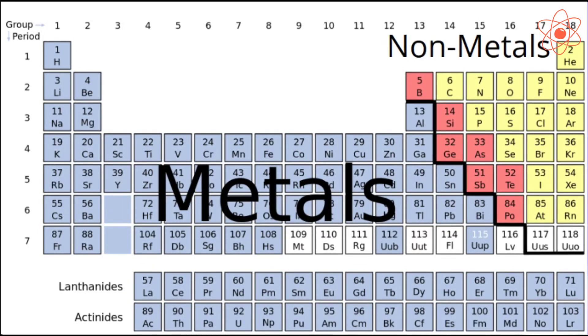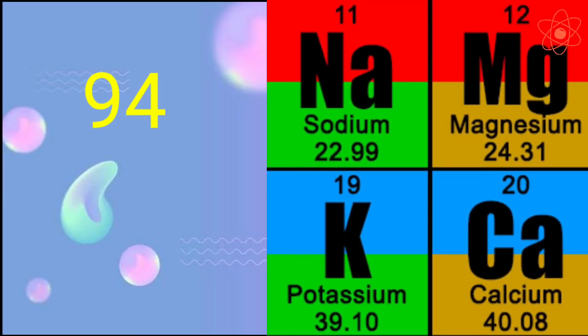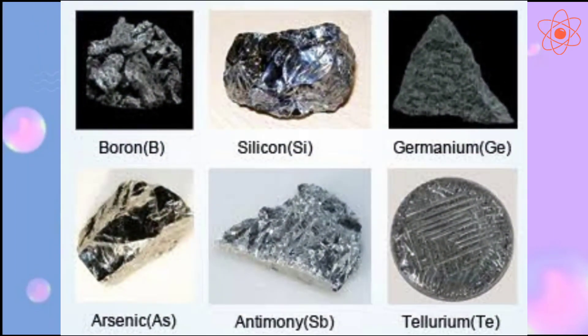There are about 118 different known elements till date, out of which 94 are metals and the rest are non-metals or metalloids.